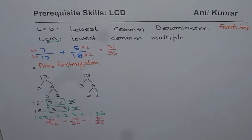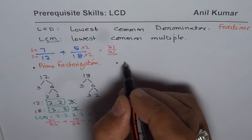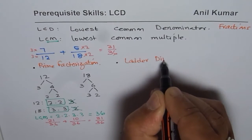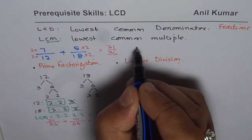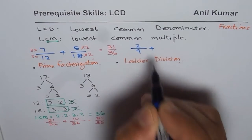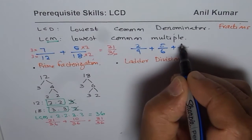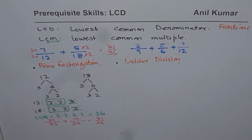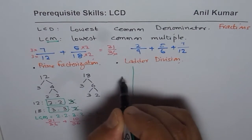Now I will show you another technique to find lowest common denominator or LCM. These are similar terms, method is the same. We call it ladder division. Let me take a new example with more numbers: 2 over 9 plus 5 over 6 plus 7 over 12. To add these three fractions we need a common denominator, so we follow the method of ladder division.